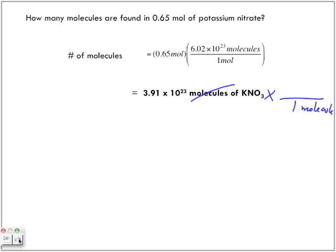But in one molecule, we're going to have how many atoms? Three, right. Three oxygen, one nitrogen, one potassium. Three plus one plus one? Five. So there are five atoms in one molecule of potassium nitrate.